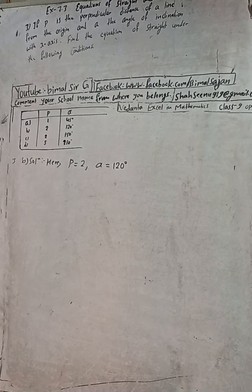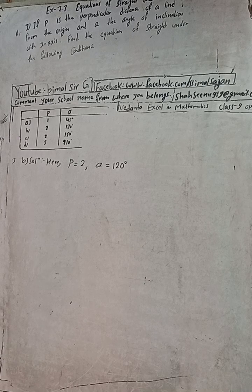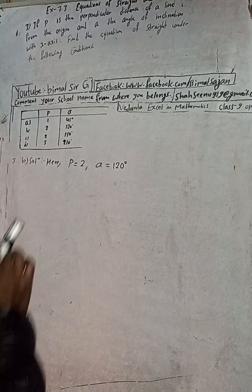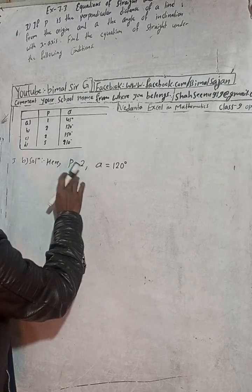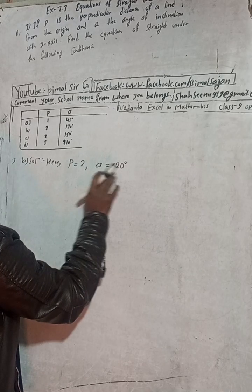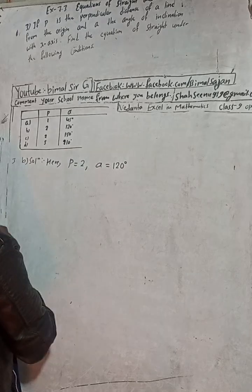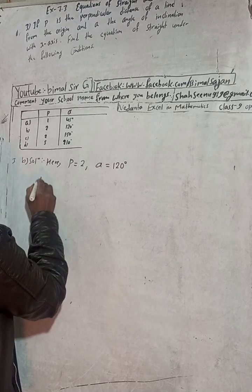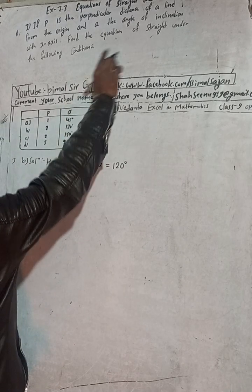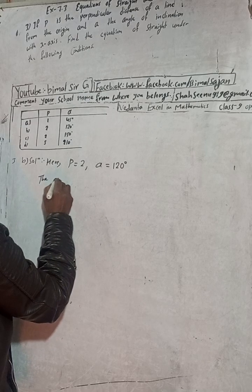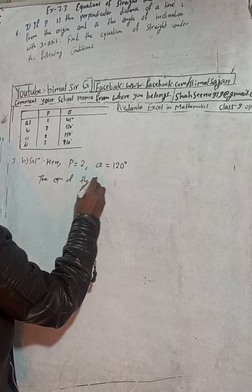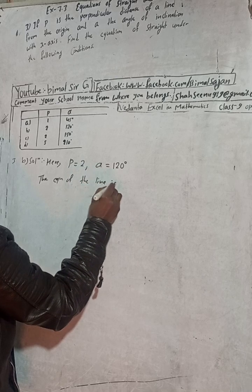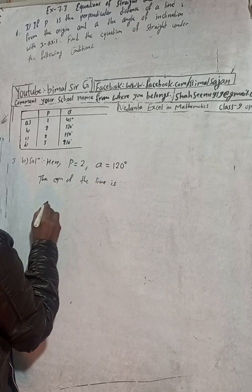This is question number 3B. P is equal to 2 and alpha is equal to 120 degrees. We have to find the equation of this line, where P is the perpendicular distance.